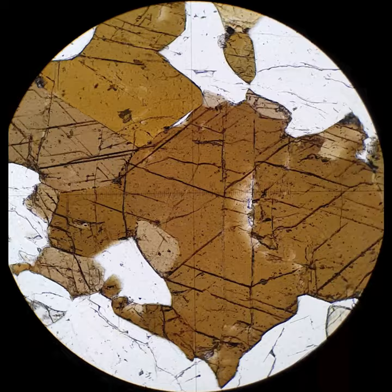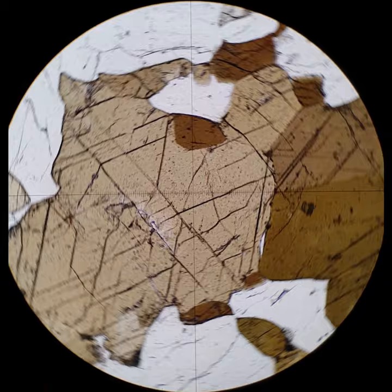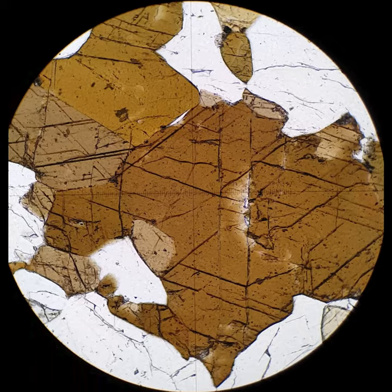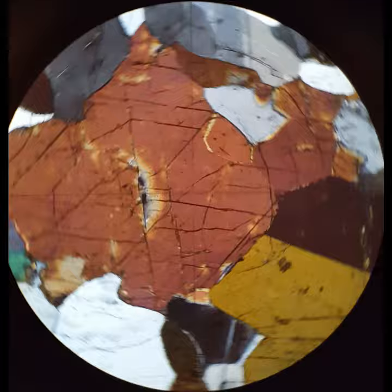This is fairly commonly what people think of for hornblend, brown pleochroic. This one is an N-section, so you can see the 60-120 cleavage to it. There are not many minerals that have this brown color. However, biotite is the only other one that's pretty common, and biotite has bird's eye extinction and wouldn't have this amphibole-type cleavage.